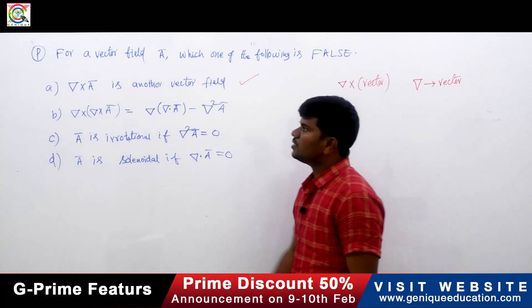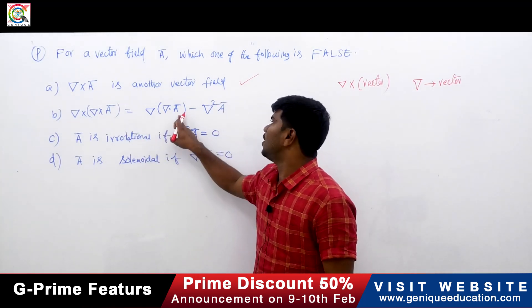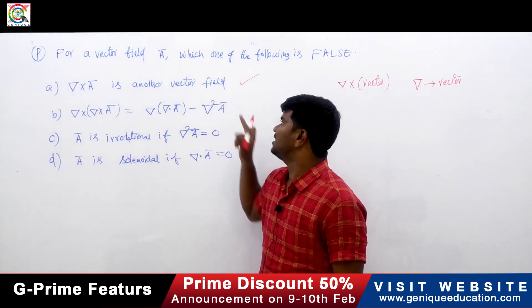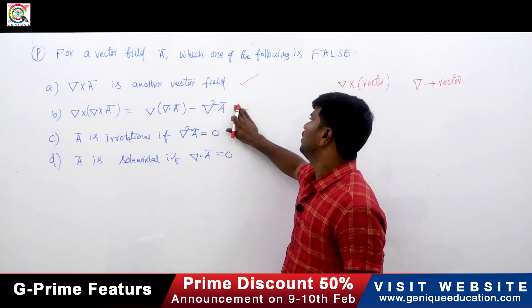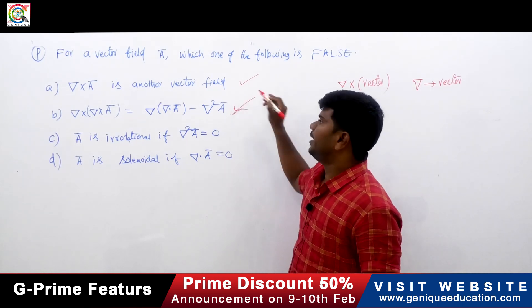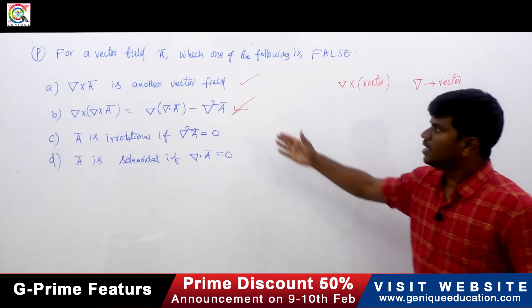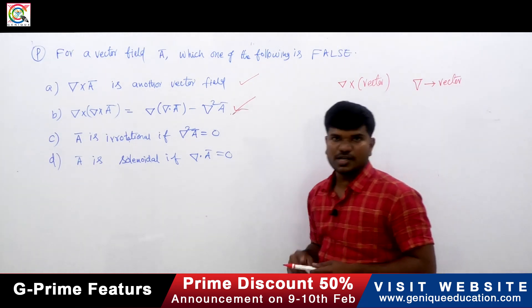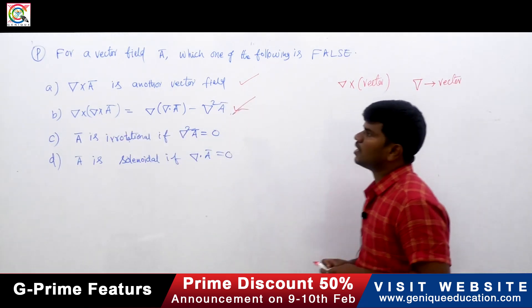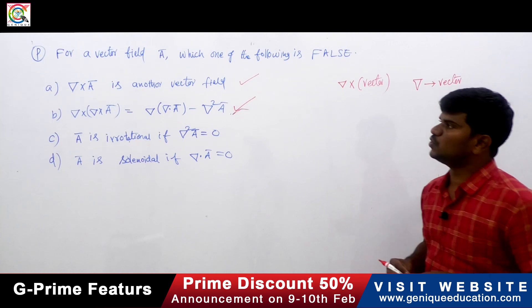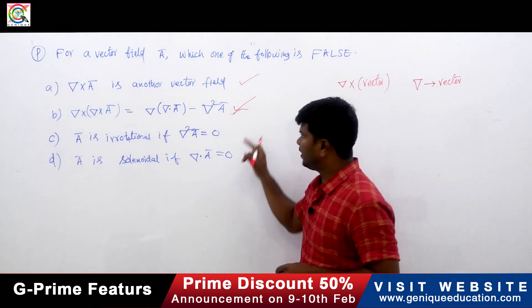The second option is: del cross del cross ā equals del of (del dot ā) minus del squared ā. This is one of the very important vector identities, so this is also correct. From vector identities, del cross del cross ā = del(del·ā) − del²ā.